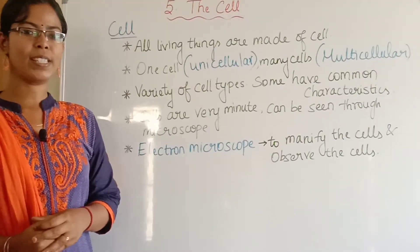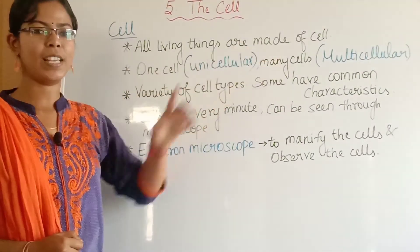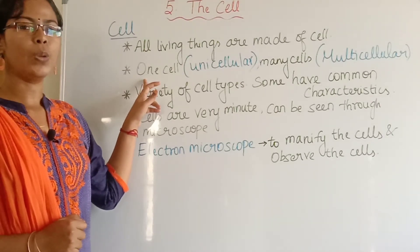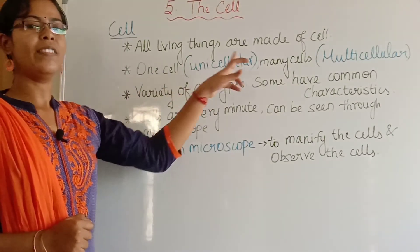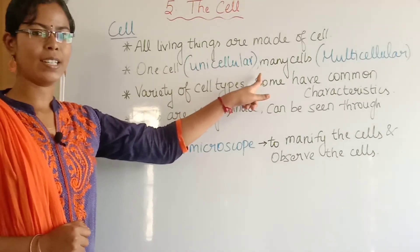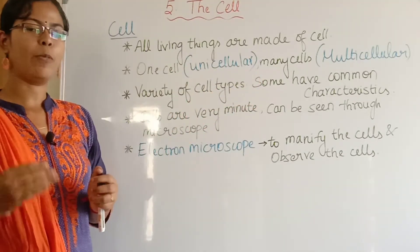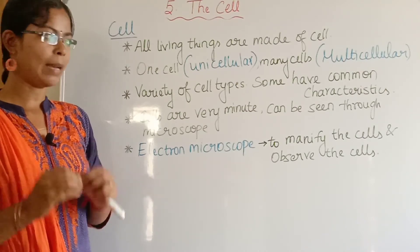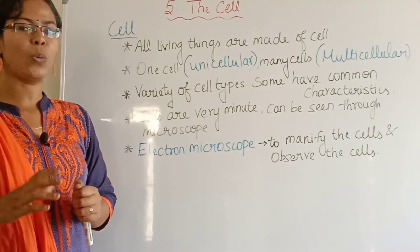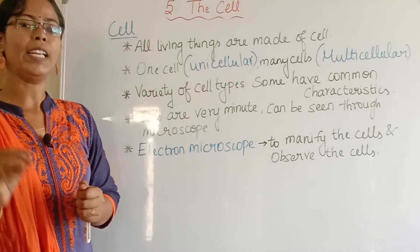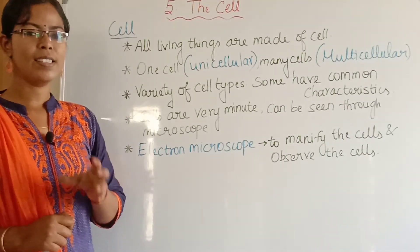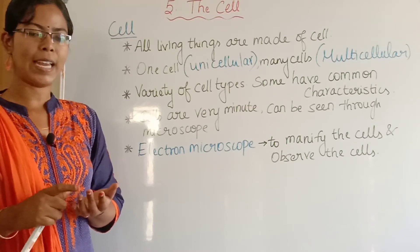Now let's see about the cell. All living things are made up of cells. A living organism can be made of one cell — it is called unicellular. If it is made up of many cells, it is called multicellular. We have already seen the difference between unicellular and multicellular organisms in Term 1. Cells are very minute and cannot be seen through our naked eye — they can be seen only through a microscope. Nowadays, electron microscopes are used to magnify the cells.